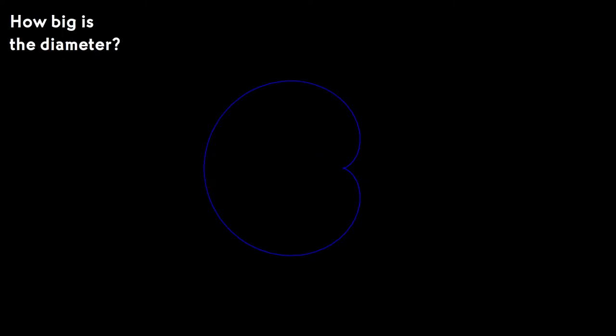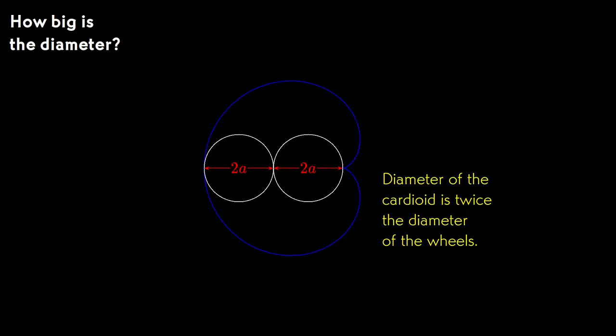Let's look at how big the diameter is. Each wheel has radius a, and when we place the fixed wheel and the moving wheel, they lie side by side exactly within the cardioid. So the diameter of the cardioid is twice the diameter of the wheels.